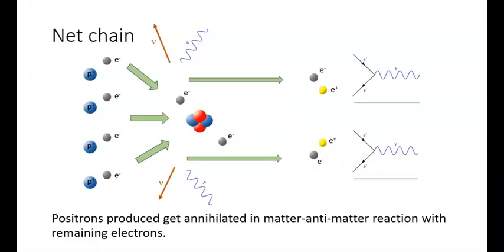The net chain is the use of the equivalent of four hydrogen atoms to produce one helium atom with the release of neutrinos and gamma radiation.